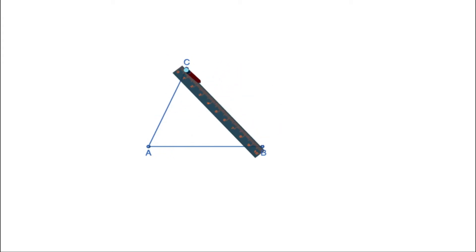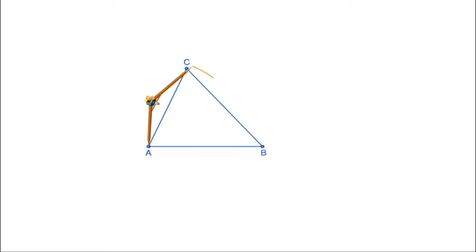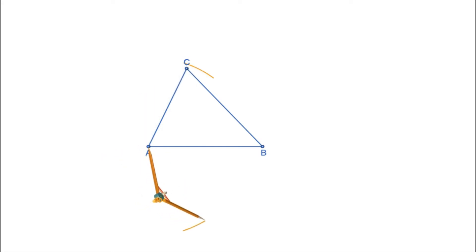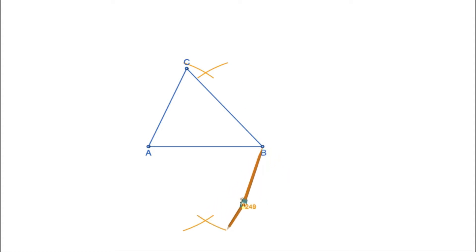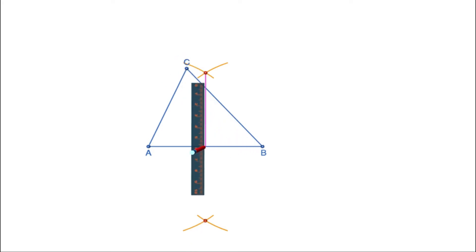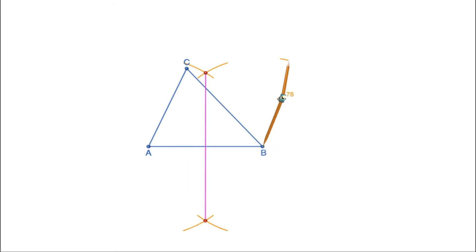Now we have to draw the perpendicular bisectors of all three sides. First, let us draw the perpendicular bisector of side AB. Put the compass at A, take more than half the length of AB, and draw arcs on both sides of AB. Then put the compass at B with the same radius and draw arcs on both sides of AB. Mark the points of intersection and join them. This line is the perpendicular bisector of AB.